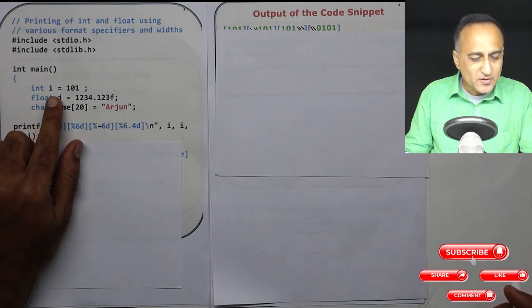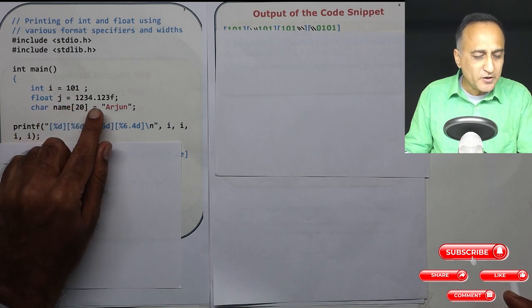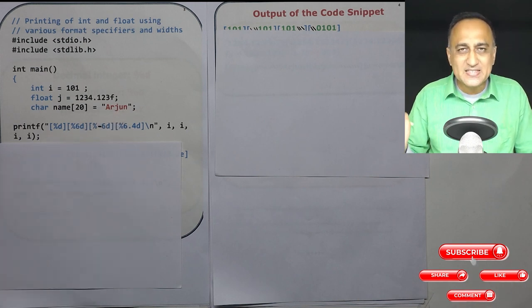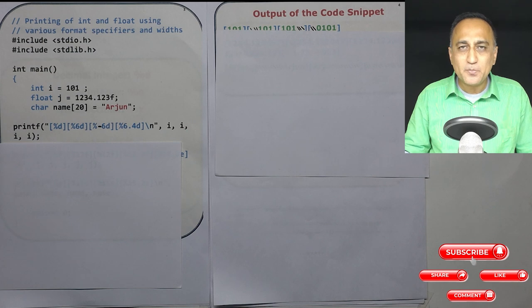I have declared an integer variable i as 101. A real number float j as 1234.123f, f at the end indicates that it's going to be a single precision floating point number. If you forget to mention the f automatically it is initialized as a double precision floating point number.